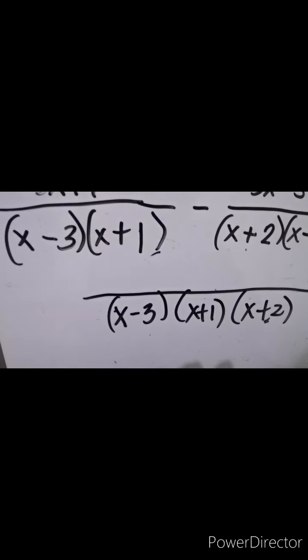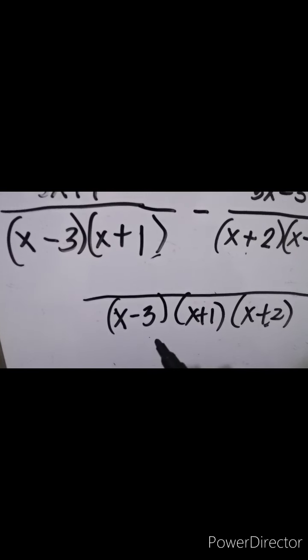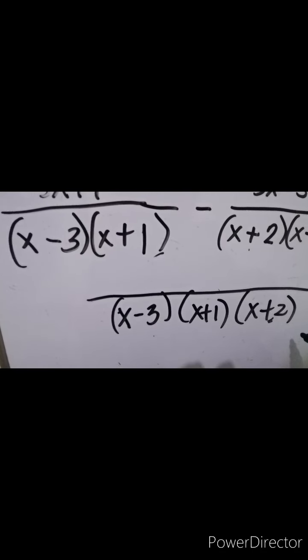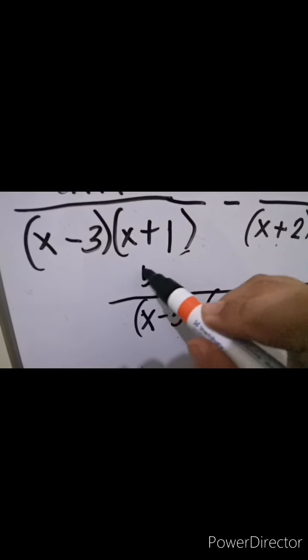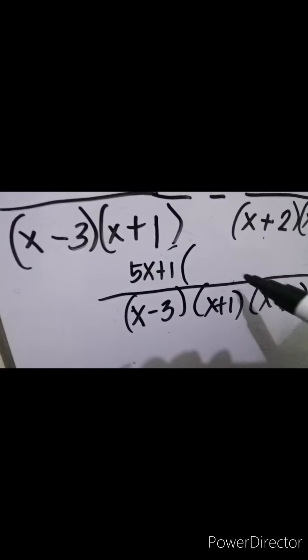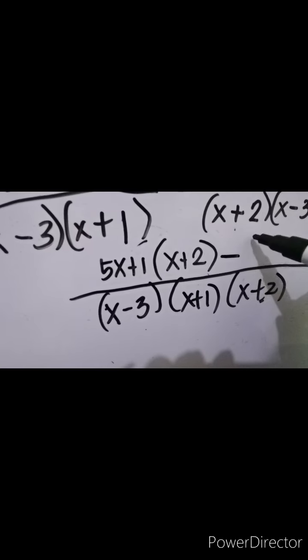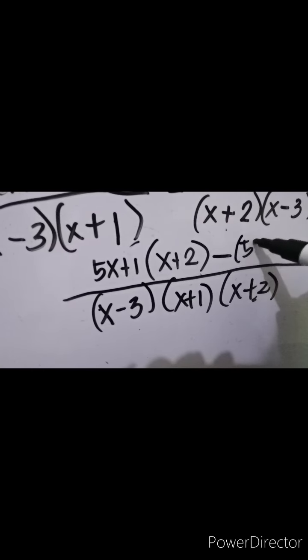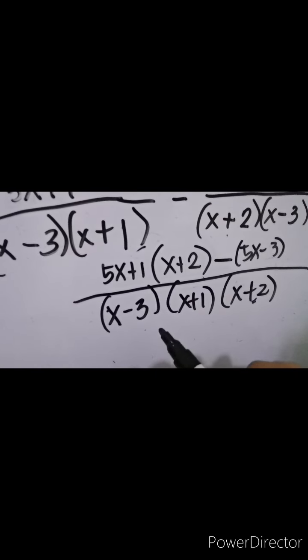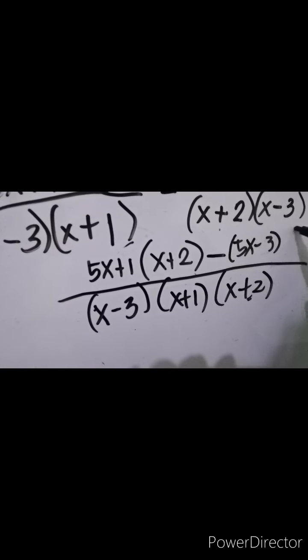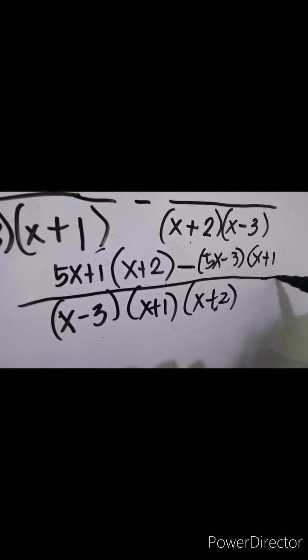Next, LCD divided by denominator. For the first fraction: LCD (x minus 3)(x plus 1)(x plus 2) divided by (x minus 3)(x plus 1) — cancel — what remains is x plus 2. So we have (5x plus 1) times (x plus 2) minus. For the second fraction: LCD divided by (x plus 2)(x minus 3) — what remains is x plus 1. So we have (5x minus 3) times (x plus 1).